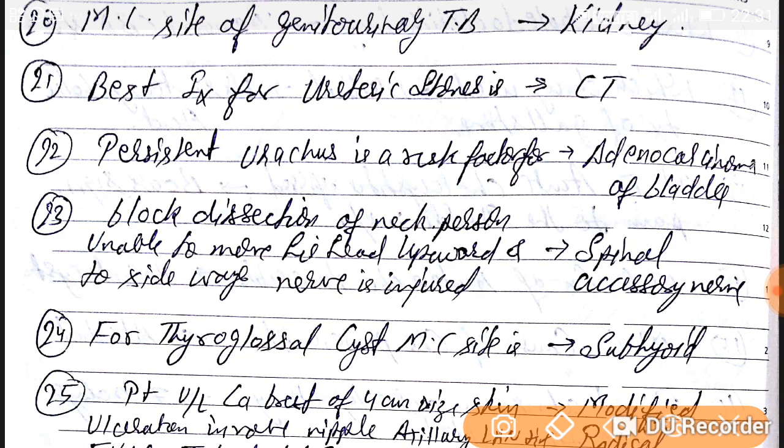The most common site is kidney. If they ask in the female genital tract, that is fallopian tube, and in the fallopian tube it's the ampulla. If they ask gastrointestinal tract, then it's the terminal ileum. Remember this.